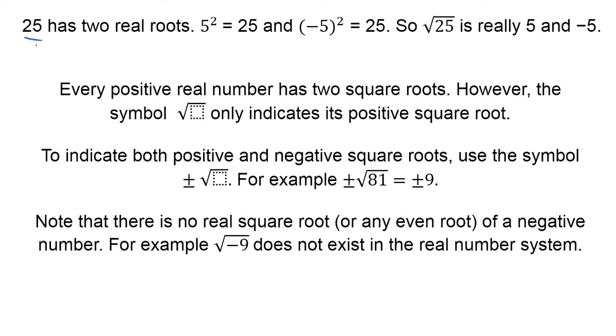Number 25, for example, nice easy one, has two real roots. What does that mean? So 5 squared equals 25. That's the opposite of taking the square root if you square something. Well, negative 5 squared is also 25, and so the square root of 25 could equal 5 or negative 5.